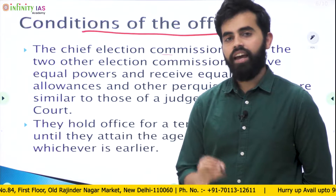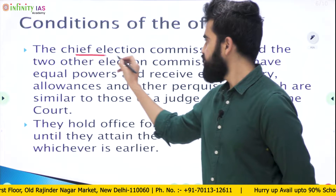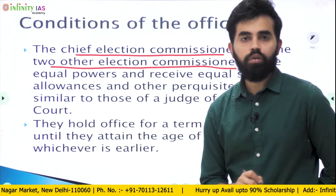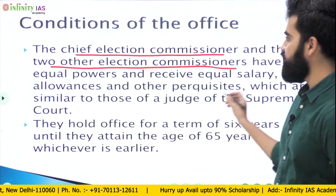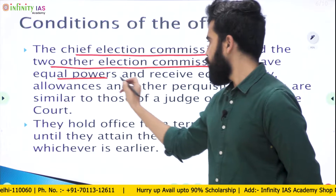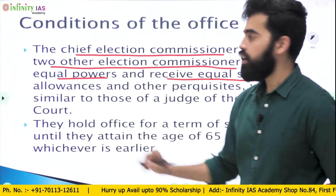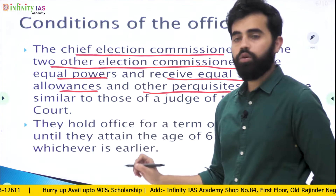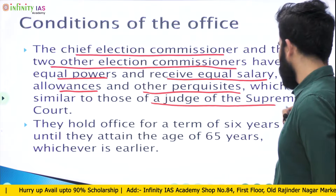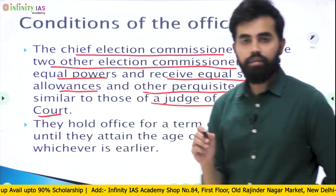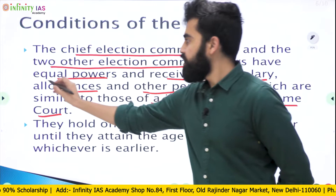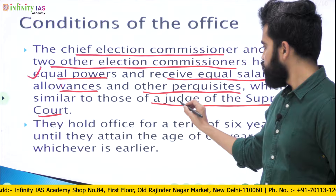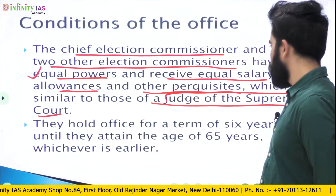As we have already seen, the election commission has one chief election commissioner and two other election commissioners. The condition of this office is that they have equal powers and receive equal salary, allowances and other requisites which are similar to those of a judge of the Supreme Court. For prelims, this is what is important: they have equal powers and salaries, and those are similar to the judge of the Supreme Court.